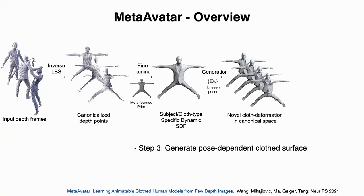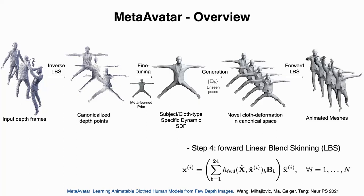After fine-tuning, we obtain this instance-specific neural avatar, and then we can generate pose-dependent cloth deformations given unseen poses. Then, we can apply forward LBS to get animated bodies.